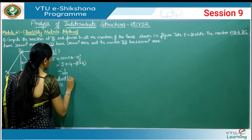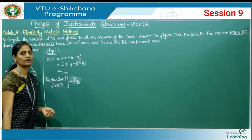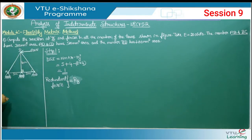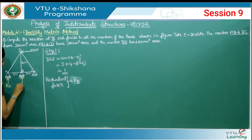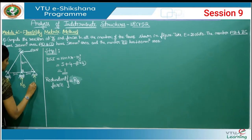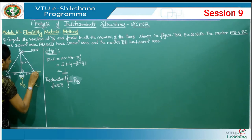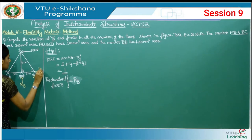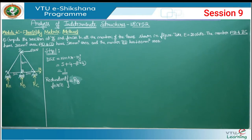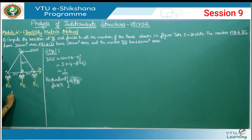Mark the reactions on the truss: reaction at A is RA, reaction at B is RB, reaction at C is RC. Since C is a hinged support, we have one more reaction in the horizontal direction, call that HC. Assume all unknown reactions in the positive sense. You can call this Figure A — the given truss.